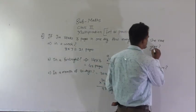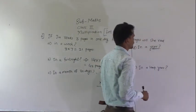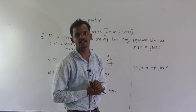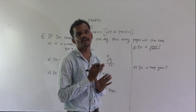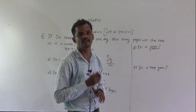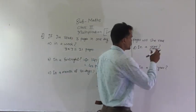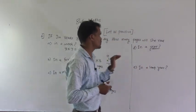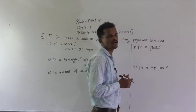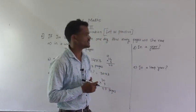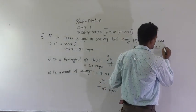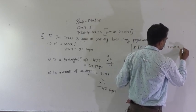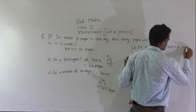Then in a year. First think about how many days are there in a year. We know 365 days are there in a year. In each day she reads 3 pages. So in 365 days she will read 365 multiply by 3 pages.